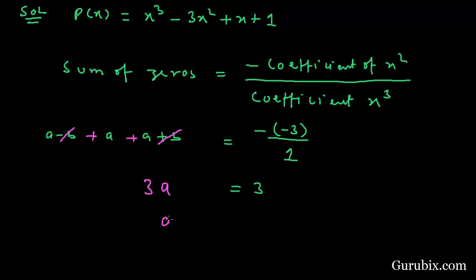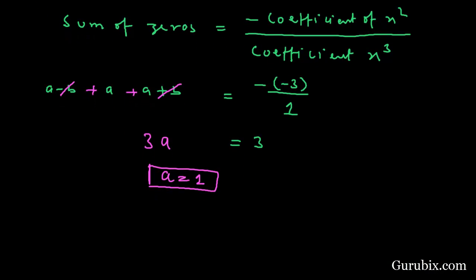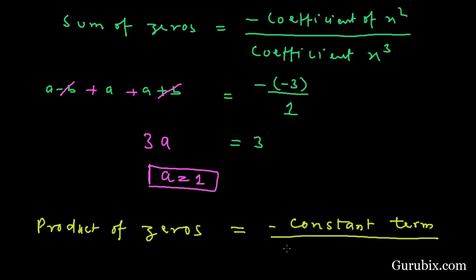Now we shall find the product of zeros. The product of zeros equals minus the constant term over the coefficient of x³.